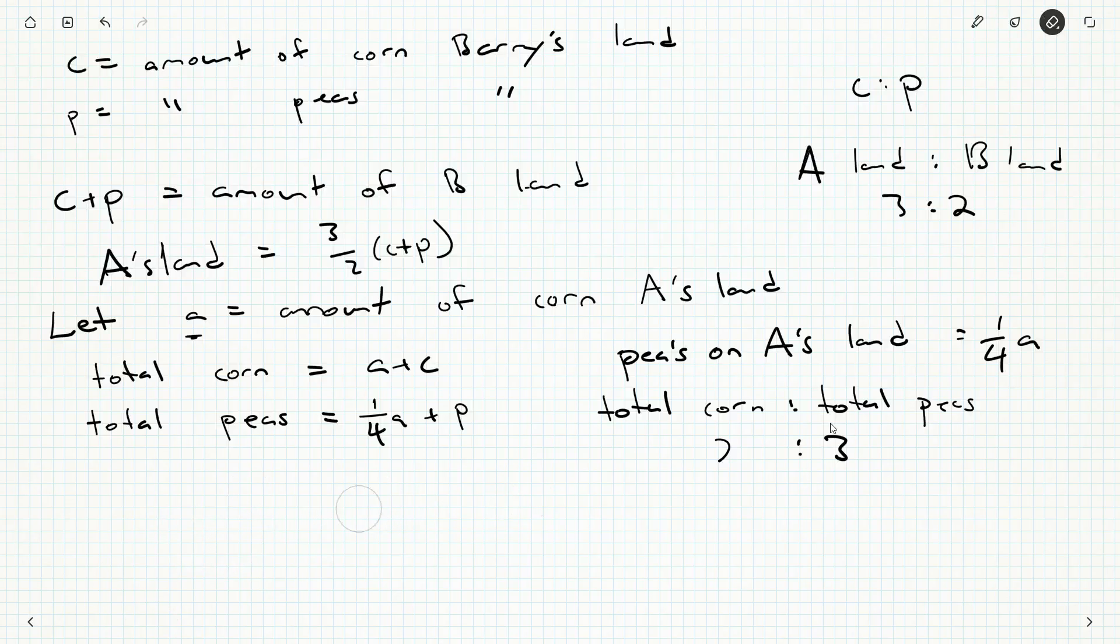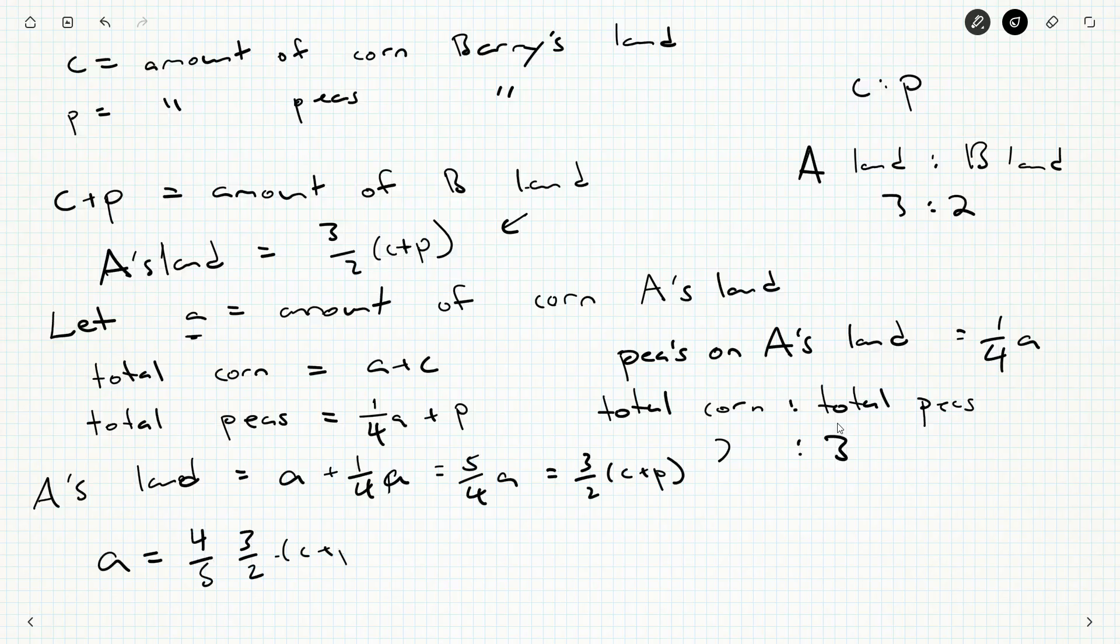Before I get into this, I've got another equation I can set up. So I know the total amount of Angela's land is three halves C plus P, but another way to calculate the amount of Angela's land is the amount of corn plus the amount of peas on Angela's land. And we know those numbers now. So this is five quarters A, and that's going to be equal to three halves C plus P. So another way to say that is A is four fifths three halves C plus P. Some of this cancels out, and we're left with six fifths C plus P.